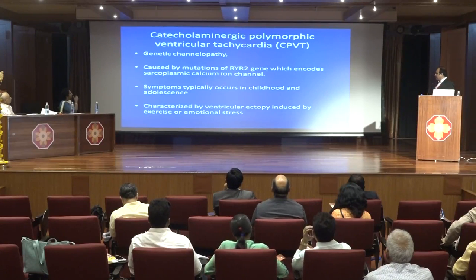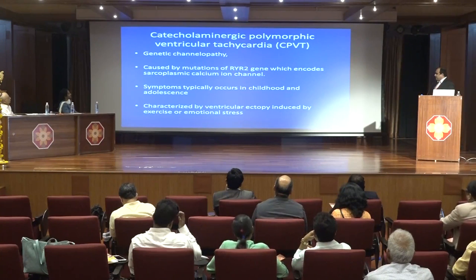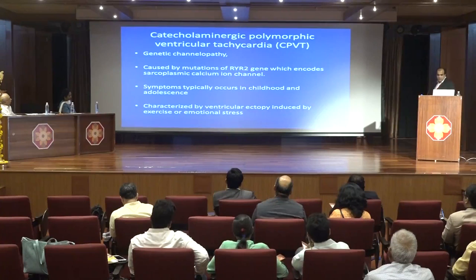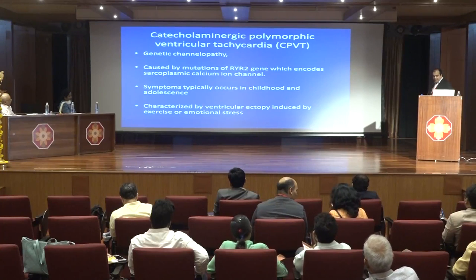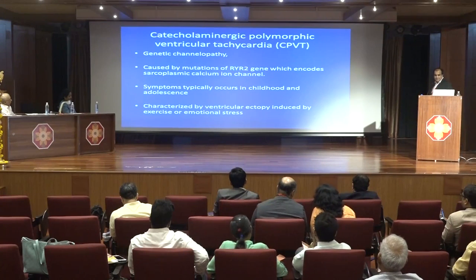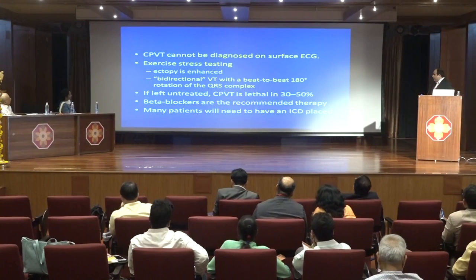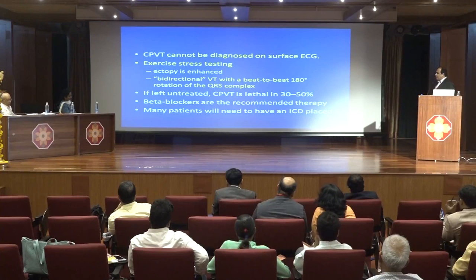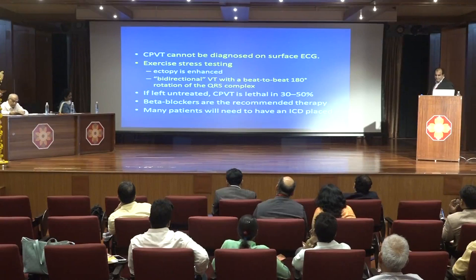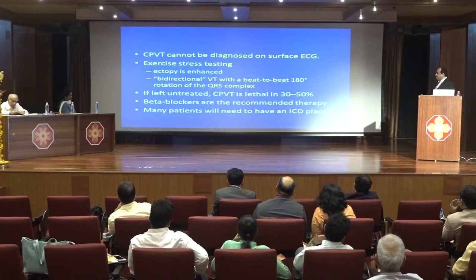Catecholaminergic polymorphic VT (CPVT) is a genetic channelopathy caused by mutation of the RYR2 gene, which encodes the sarcoplasmic calcium channel. It typically occurs in childhood and adolescence, characterized by ventricular ectopy increased with exercise or emotional stress. It cannot be diagnosed on surface ECG; exercise stress testing reveals increased ectopics or bidirectional VT with beat-to-beat 180-degree rotation of QRS complexes. If left untreated, mortality is 50%. Beta blockers are given, and some patients require ICD.